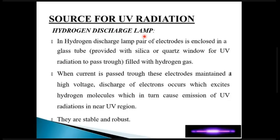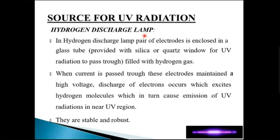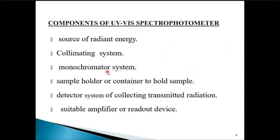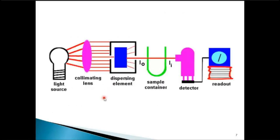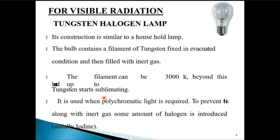In our previous lectures on UV-visible spectroscopy, we have covered almost all the theoretical part except the application. Now we have moved on to instrumentation. We are looking at different components of a UV-visible spectrophotometer — there are six components. We had started with the sources of UV radiation and covered requirements for an ideal source.